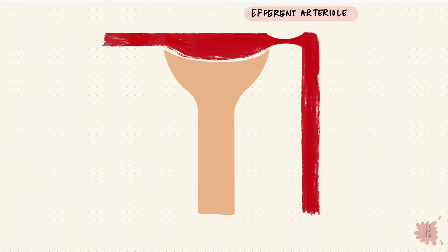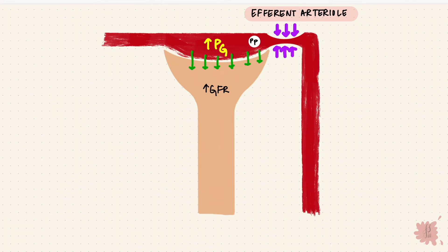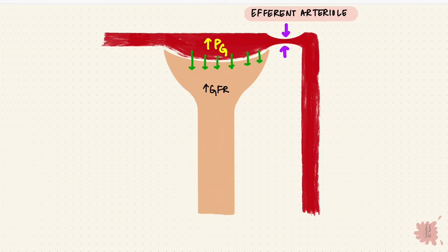If the efferent arteriole gets constricted — under the influence of something like angiotensin 2 — that would increase the back pressure in the capillaries, so there's high capillary hydrostatic pressure and the GFR actually increases. This applies with moderate constriction of the efferent arteriole. But if it's severe, the renal blood flow reduces by a lot, and plasma proteins accumulate in the glomerulus. Since plasma proteins can't get through the glomerular filtration barrier, they're responsible for oncotic pressure, which pulls fluid back toward the capillary — becoming greater than the hydrostatic effect. So the GFR reduces with severe constriction, versus increasing with moderate constriction.